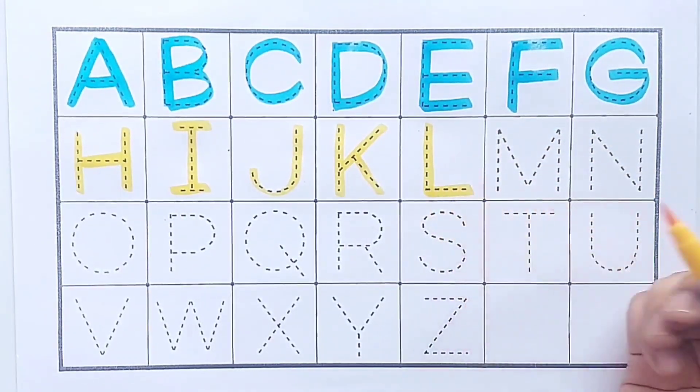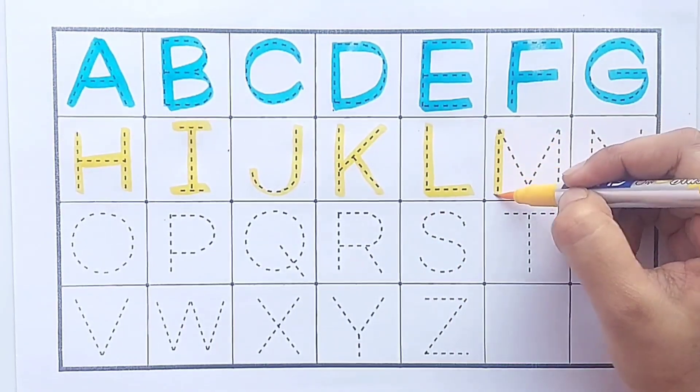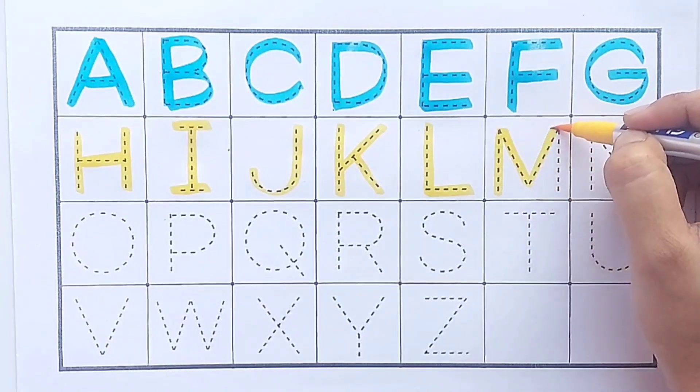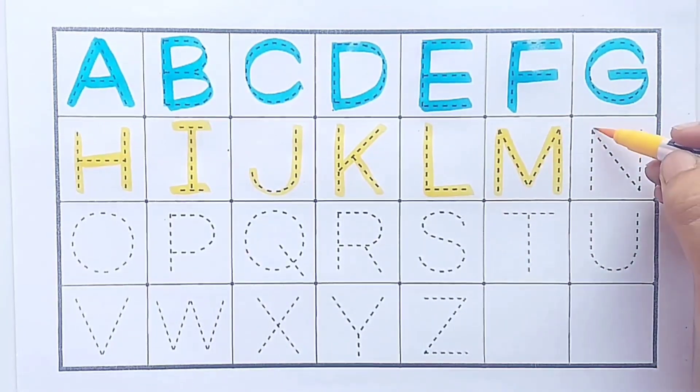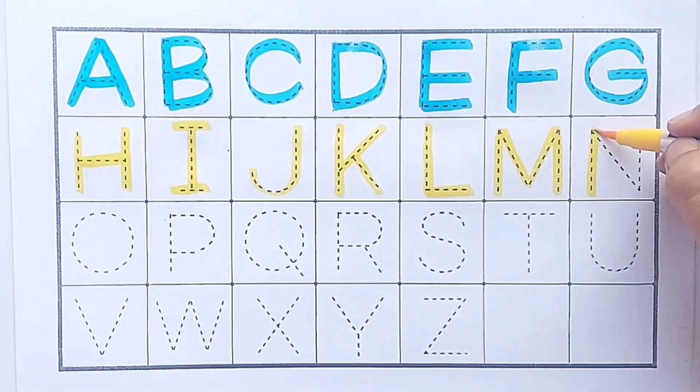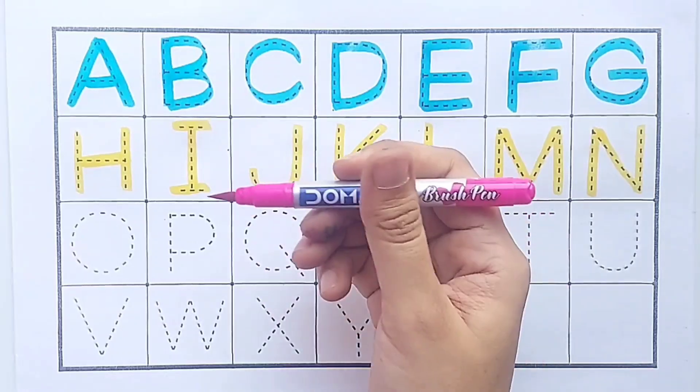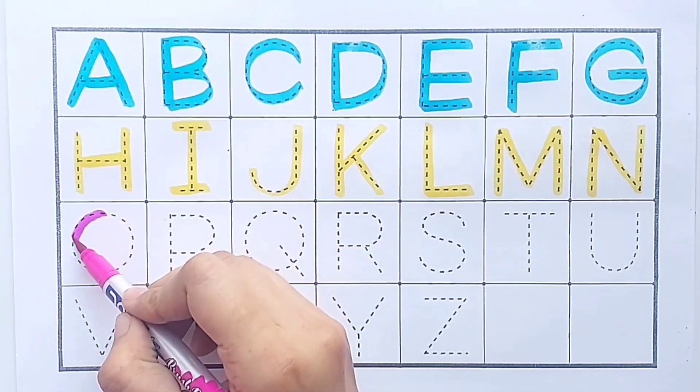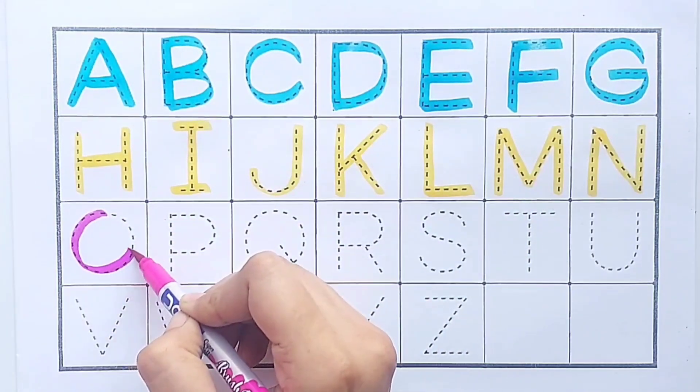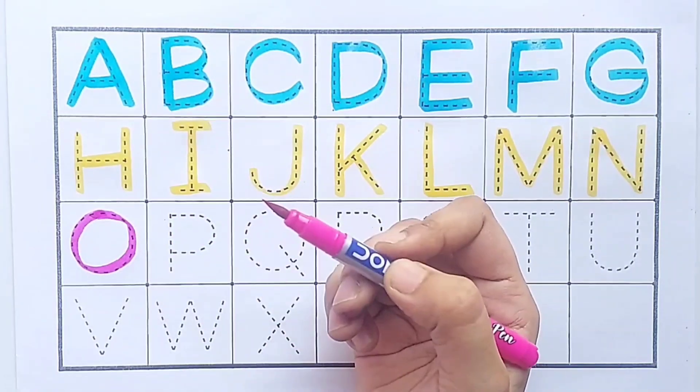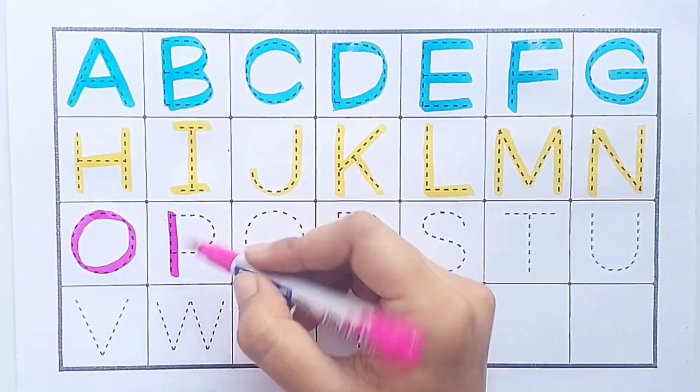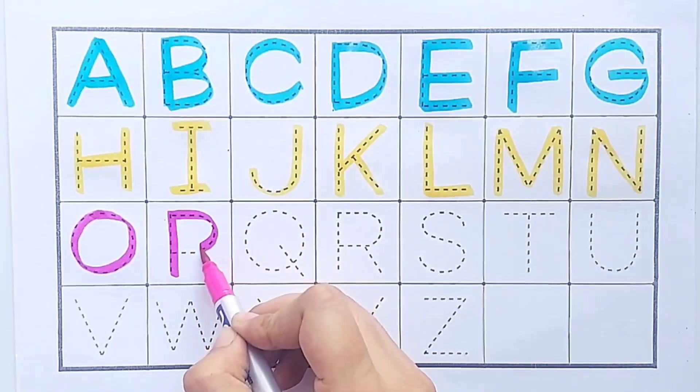M, M for monkey. N, N for nest. Pink color. O, O for owl. P, P for pigeon.